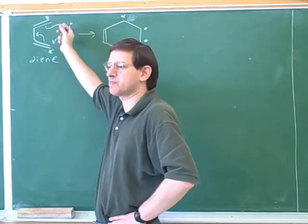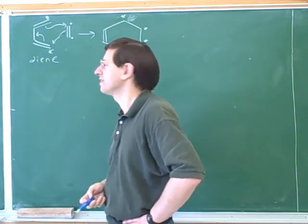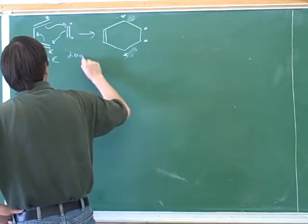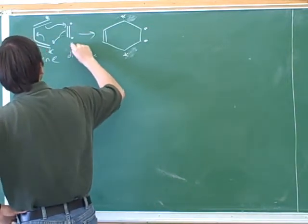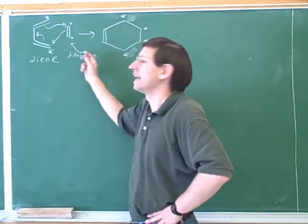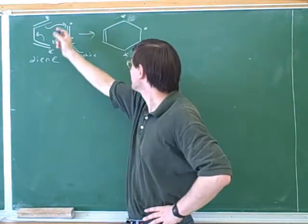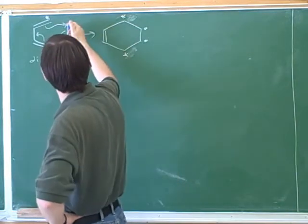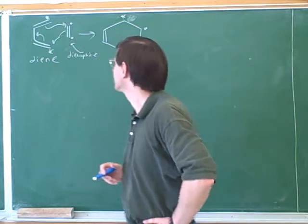And then we need a name for this participant as well. Dienophile. That's the dienophile. That means diene lover. This is, or like her to be less dramatic. So this molecule wants to react with this diene over here. It likes or loves to react with it.